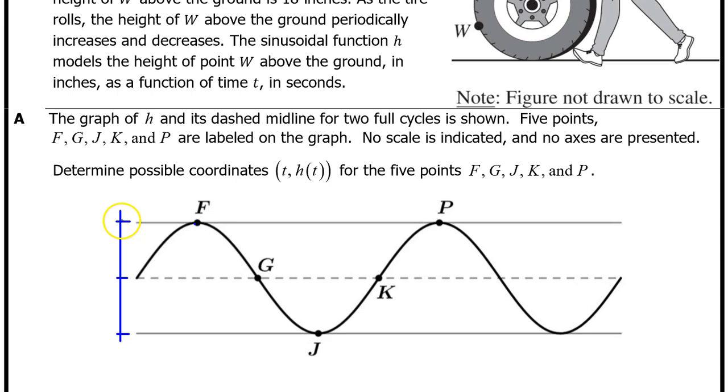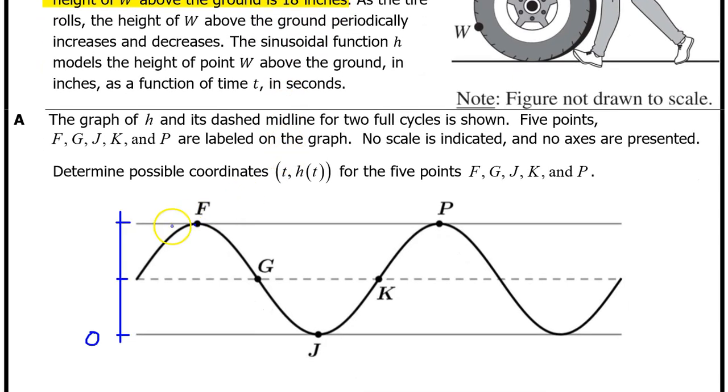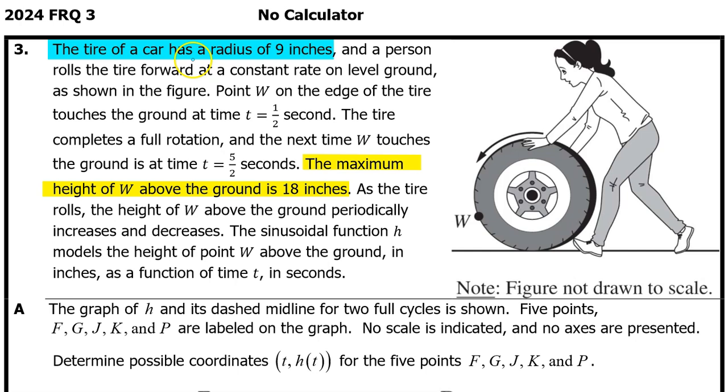First, let's figure out the maximum, minimum, and middle output values. Function h models the height of point W above the ground. W periodically touches the ground, so the minimum output value will be 0. We are told that the maximum height of W above the ground is 18 inches, so the maximum output value is 18. Halfway between 0 and 18, of course, is 9. So that will be the middle output value.